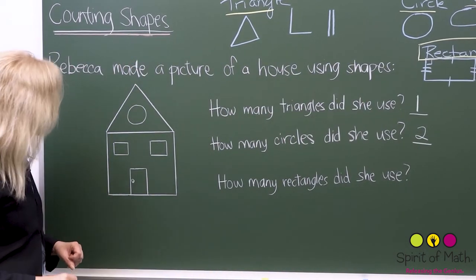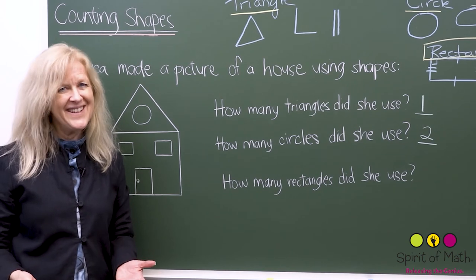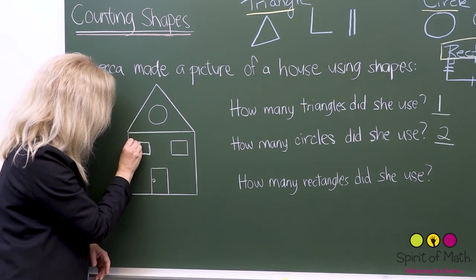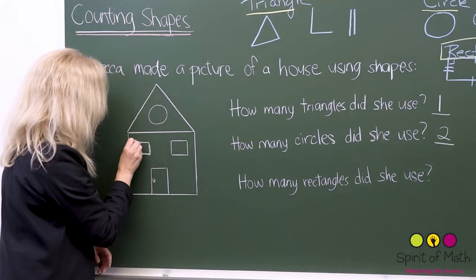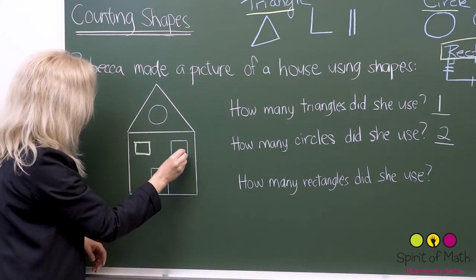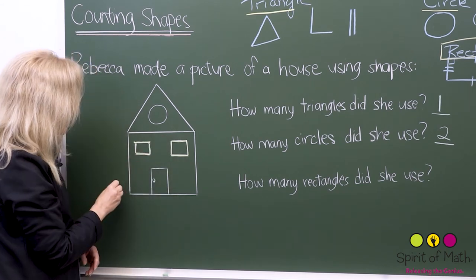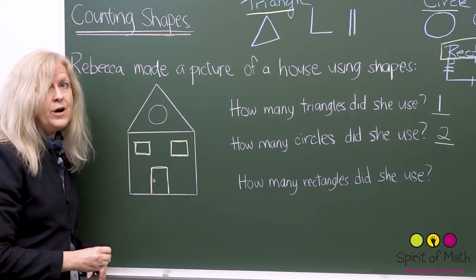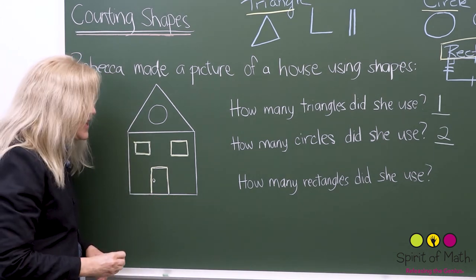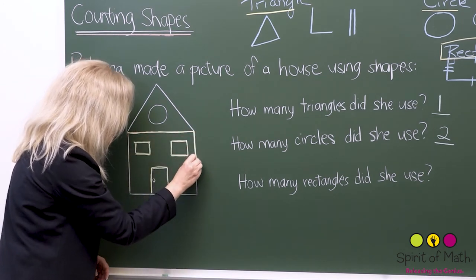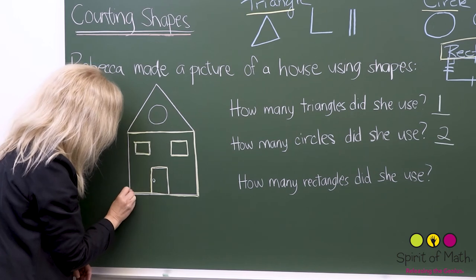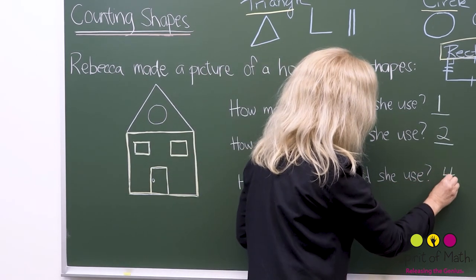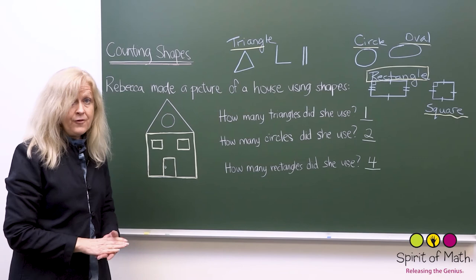Now how many rectangles did she use? Remember, a square is a rectangle, so let's count them all. I've counted one here — I'll use yellow so we can see this more clearly. One there. Then we've got two. And the door — did you see that? Three. I can see one more — can you see it? Very good if you got that. So this makes four rectangles. She used four rectangles in the picture.